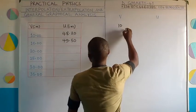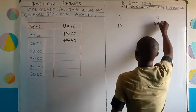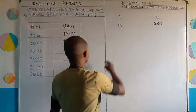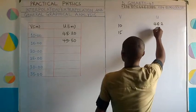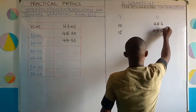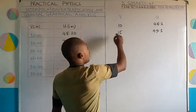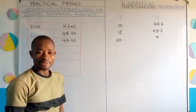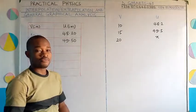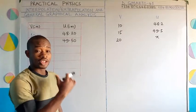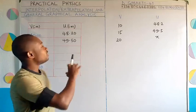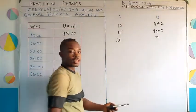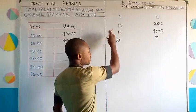When v was 10 cm, u was 48.2 cm. When v was 15 cm, u was 49.50 cm. If v is now 20 cm, what would be the value of u? We do not know, so we call it x. This is extrapolation because the x value we're getting is outside the other two values already obtained.